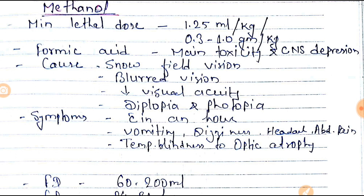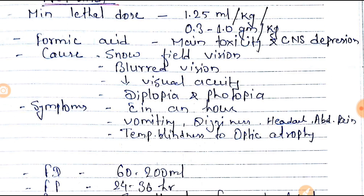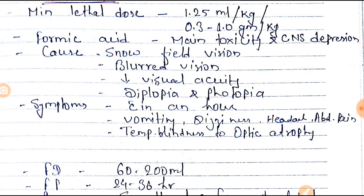Methanol poisoning causes snow-filled vision, blurred vision, decreased visual acuity, diplopia, and photophobia.